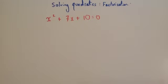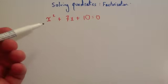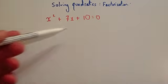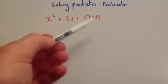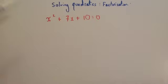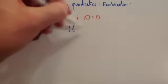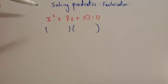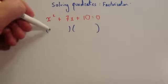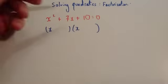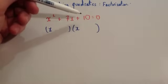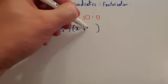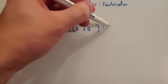Let's have a look at our first example: solve the equation x squared plus 7x plus 10 equals zero. The first thing you want to do is factorise the quadratic — and it needs to equal zero first. Put x at the front of both brackets. The two numbers must multiply to give 10 and add to give 7, so it's going to be plus 5 and plus 2. That still equals zero.